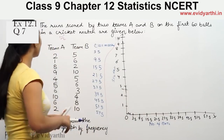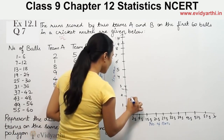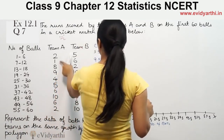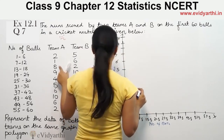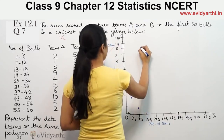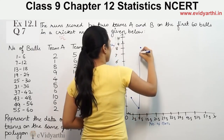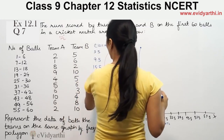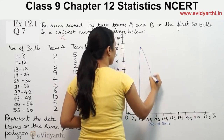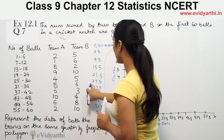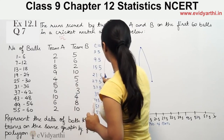For Team A, the first point is at 3.5 and 2. Then 9.5 and 1. Then 15.5 and 8. Then 21.5 and 9. Then 27.5 and 4.